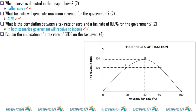What is the correlation between a tax rate of zero and the tax rate of 100? I've explained it before — in both scenarios, government will make no money at all. Explain the implication of a tax rate of 60 percent: government revenue would actually decline.